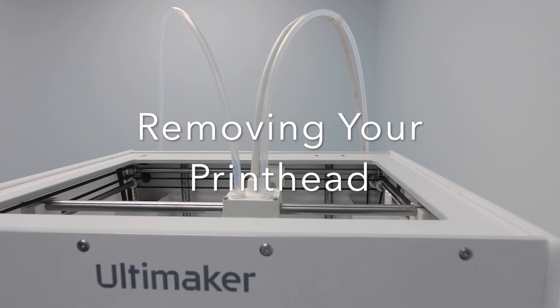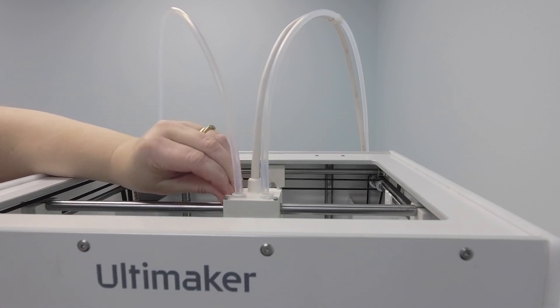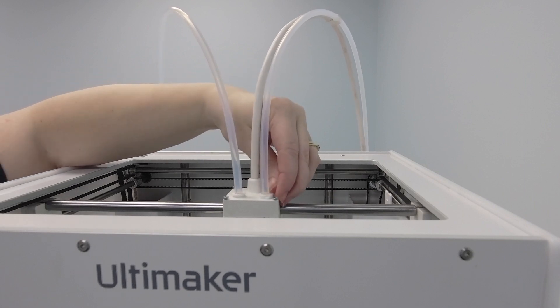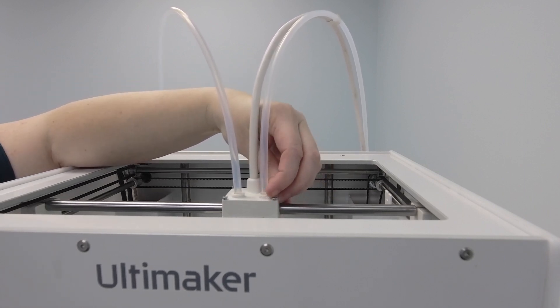The first step to removing the printhead will be to slide your clamp clips out from underneath the collets. They should come out sideways pretty easily. The trickiest part is just not dropping them.